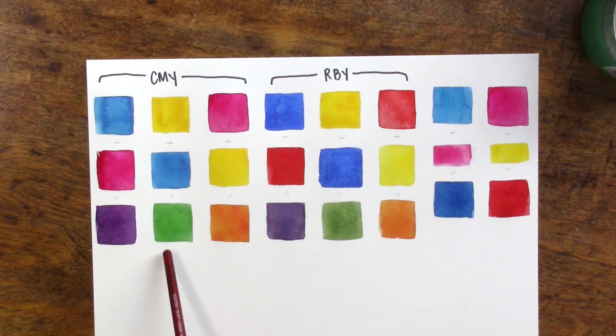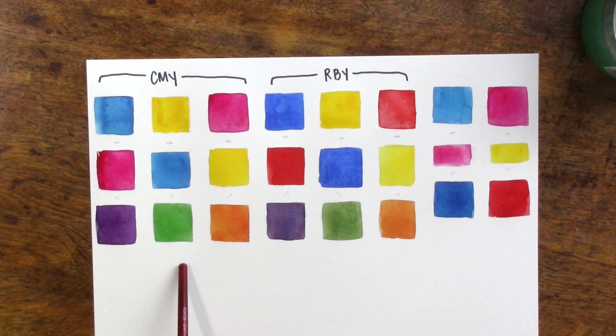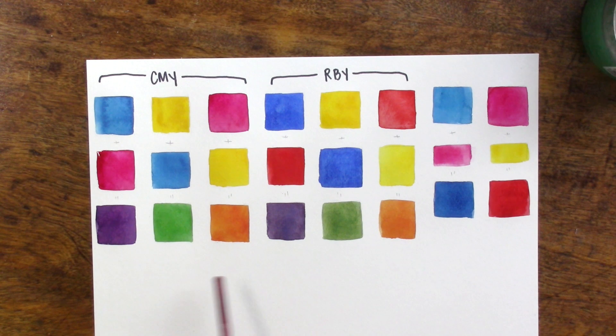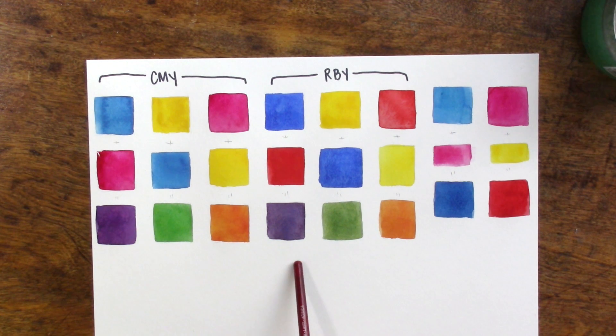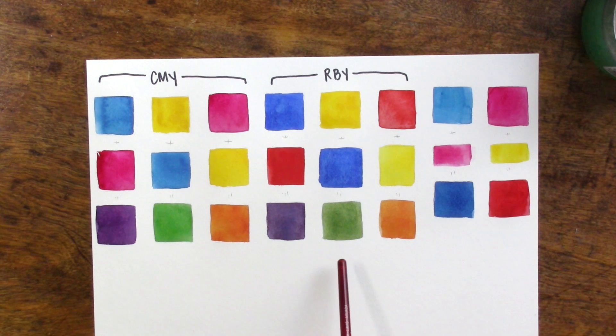In that case I would definitely recommend a Phthalo blue, a Quinacridone rose, and any kind of middle of the road mostly transparent yellow. In this case I have the PY154. I do believe that you can get a much wider range of colors with this color palette.